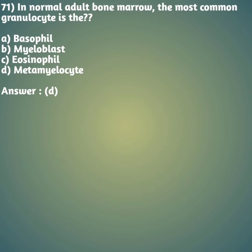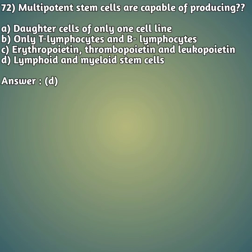Moving on to our 71st question: in normal adult bone marrow, the most common granulocyte is - option A: basophil. Option B: myeloblast. Option C: eosinophil. Option D: metamyelocyte. The right answer is answer D - metamyelocyte is the most common granulocyte in the adult bone marrow.